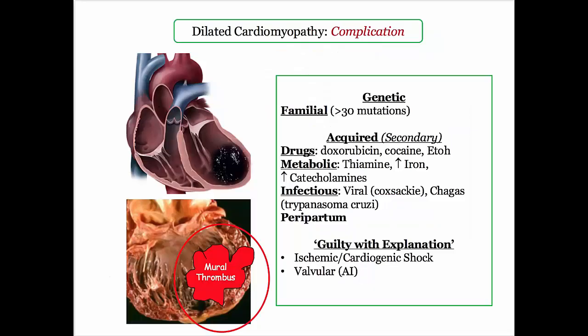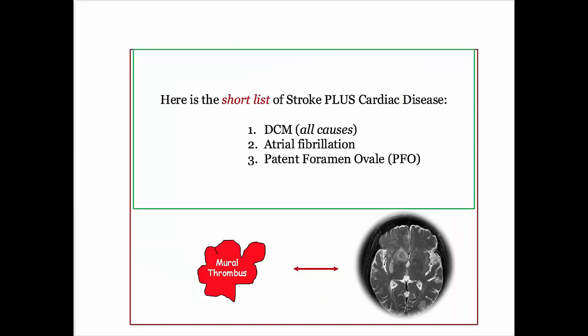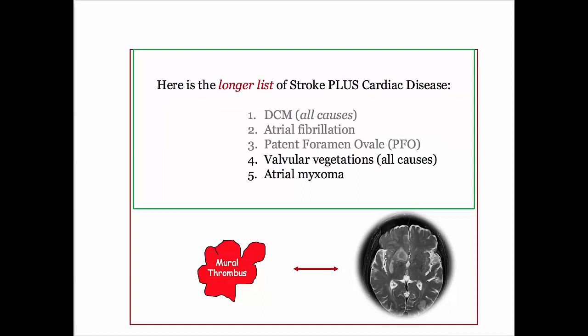For dilated cardiomyopathy, the one complication to be aware of is mural thrombus — it isn't specific to dilated cardiomyopathy and can be seen in any condition that disrupts the LV. They describe a classic patient with a pressure volume graphic consistent with dilated cardiomyopathy, and next thing you know the patient strokes out — the answer is mural thrombus. Keep mural thrombus on your shortlist of stroke plus cardiac disease: dilated left ventricle, atrial fibrillation, PFO — and yes, vegetations and myxoma too.